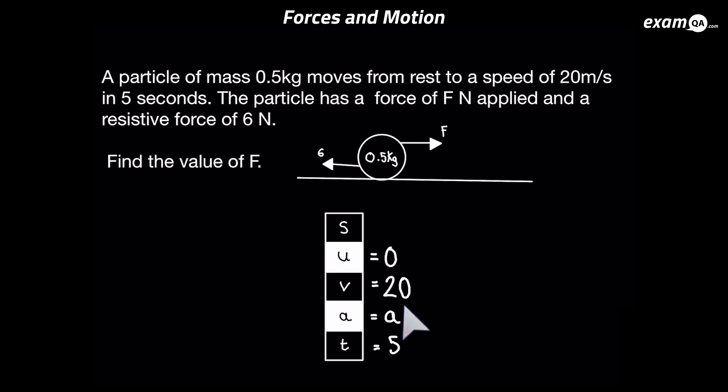I'll give you a moment to guess the formula we need to use to work out A here. And you should have said V equals U plus AT. So let's go ahead and fill it in. We can simplify this and finally make A the subject. And we get A equals 4. Now I'm sure that's going to help us because we know in Newton's second law, we have acceleration in there.